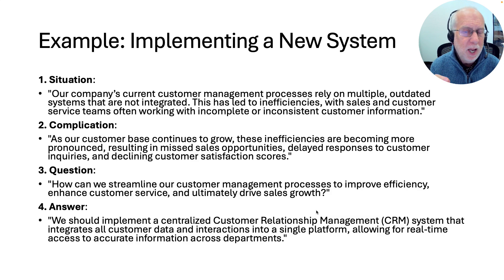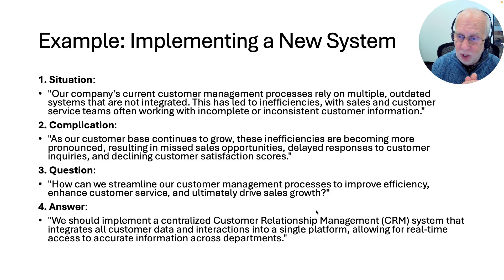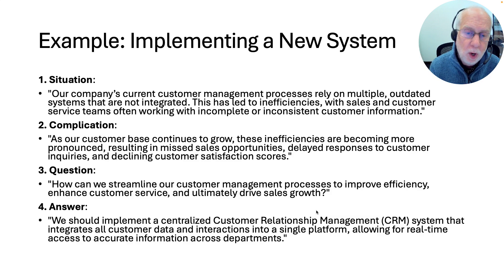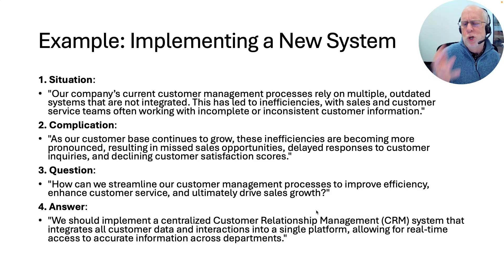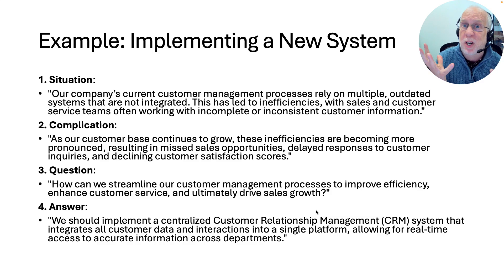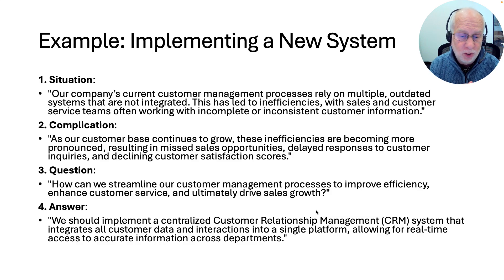Then you add a complication, which is usually a problem. In this case: 'As our customer base continues to grow, these inefficiencies are becoming more pronounced, resulting in missed sales opportunities, delayed responses,' and so on. So you've got your situation — we deal with customers — and your complication — things are going wrong. These then lead logically to a question: how can we fix this? How can we streamline our customer management processes to improve efficiency, enhance customer service, and ultimately drive sales growth? And then you give the answer — don't leave it to the end, put it at the beginning. In this case: we should implement a centralized customer relationship management system.